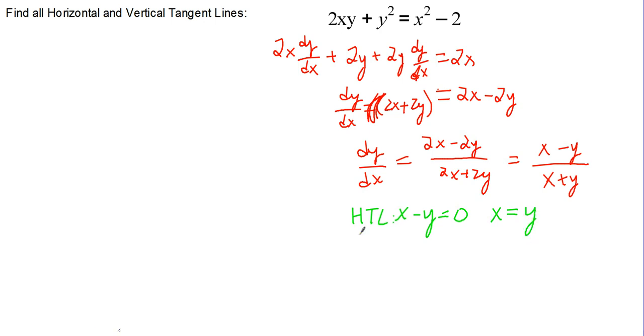For vertical tangent lines, we need to make the denominator equal to 0, because that would be when the derivative is undefined. So we have x plus y equals 0, or x equals negative y.